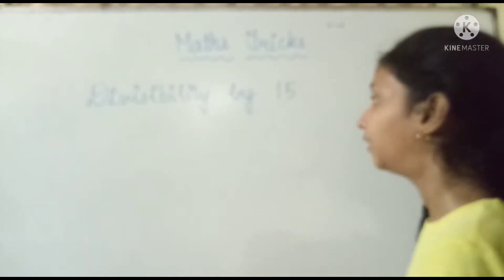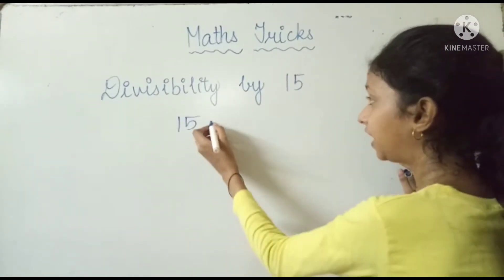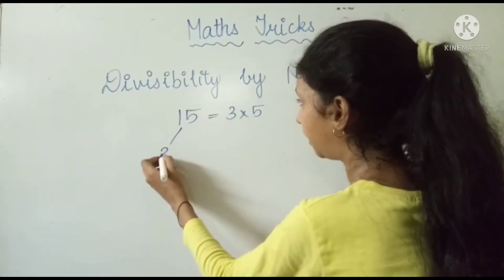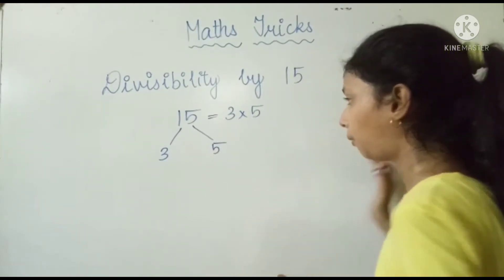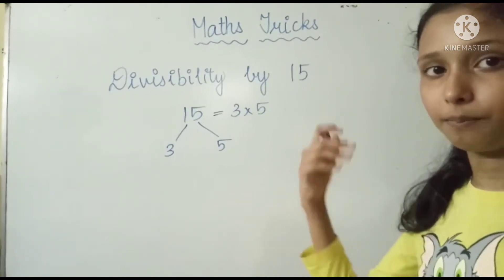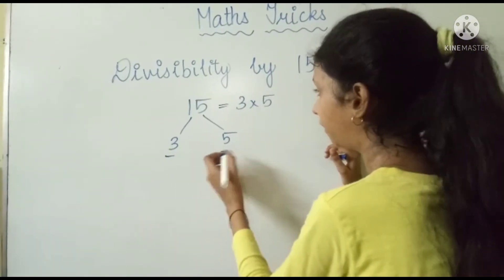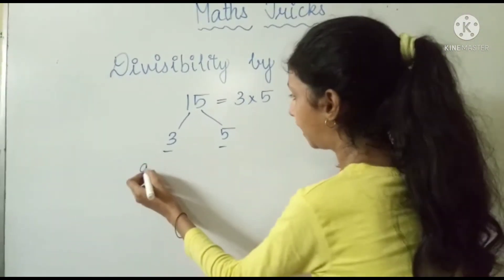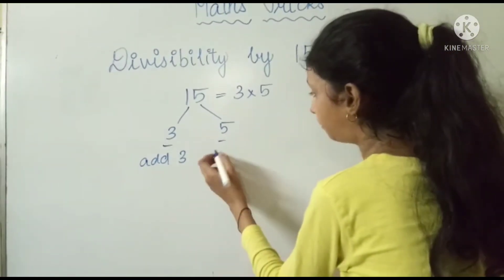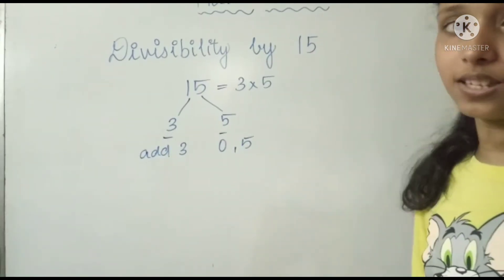Now let's look at divisibility by 15. The same approach applies: 15 equals 3 multiplied by 5. So the number must be divisible by both 3 and 5. For 3, the digit sum should be a multiple of 3. For 5, the number should end with 0 or 5.